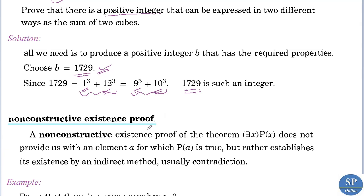Next is non-constructive existence proof. In a non-constructive existence proof of the theorem — there exists x, p of x — we are not providing such an element a such that p of a is true. Rather, we are establishing its existence by an indirect method, usually contradiction.